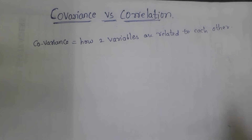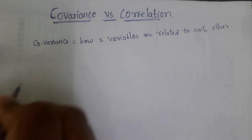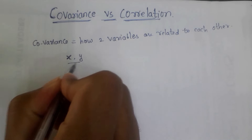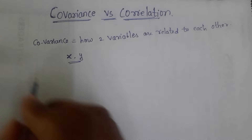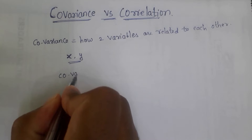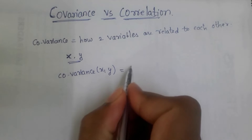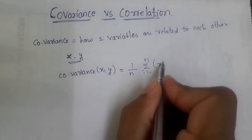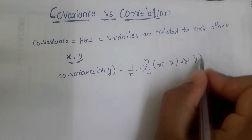If we have a dataset with many features, covariance tells us how two variables are related to each other. The formula is: covariance of x, y equals 1/n into summation from i=1 to n of (xi minus x-bar) into (yi minus y-bar). So basically, this is how two variables relate and we have a formula.